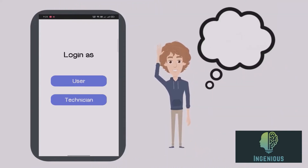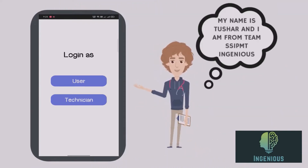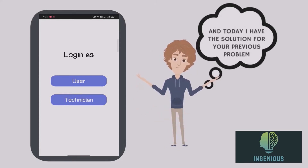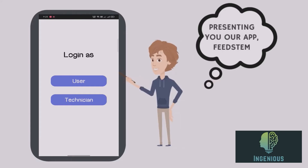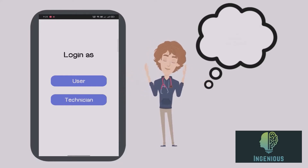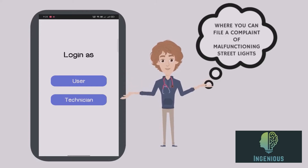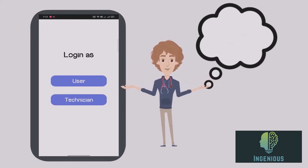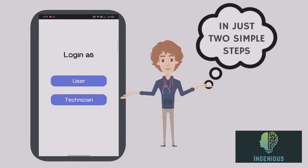Hello everyone! My name is Tushar and I am from Team SSIPMT in Genius. Today I have the solution for your previous problem — presenting our app, the Feedback System. It is an app where you can file a complaint about malfunctioning street lights in just two simple steps.